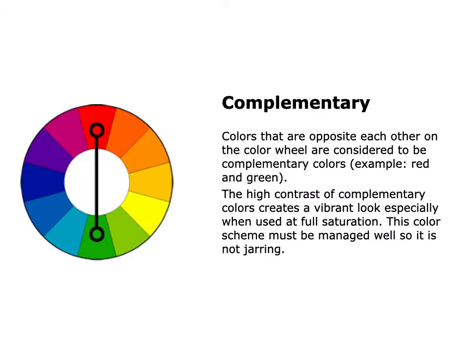Another way to use the color wheel is to organize your colors into color schemes. Colors on the opposite side of the color wheel from each other are called complementary colors. Complementary colors are kind of the opposite of what you think — for example, red and green are two complementary colors. When they're across from each other, they actually tend to clash, which means they're making each other look more vibrant.